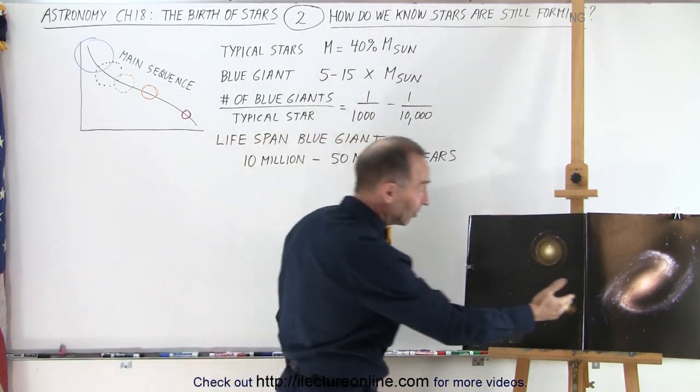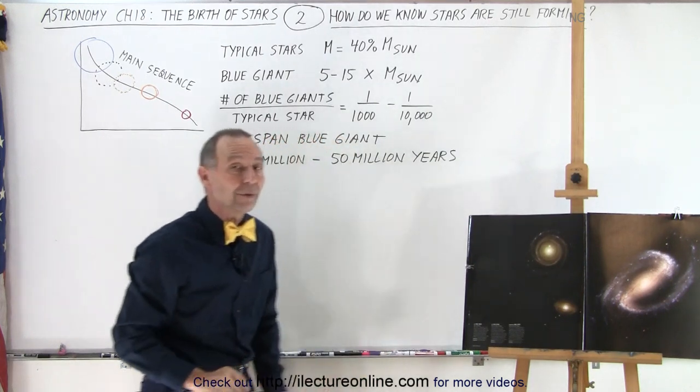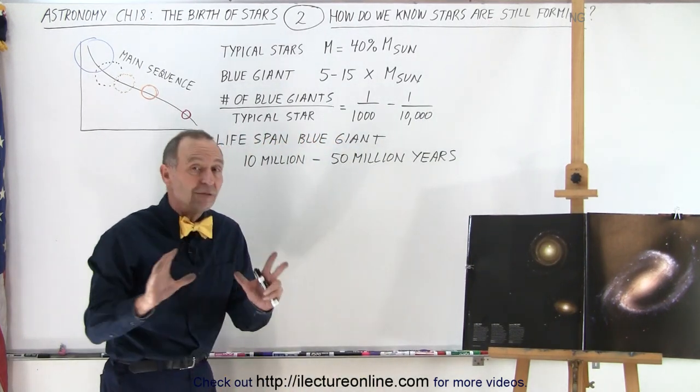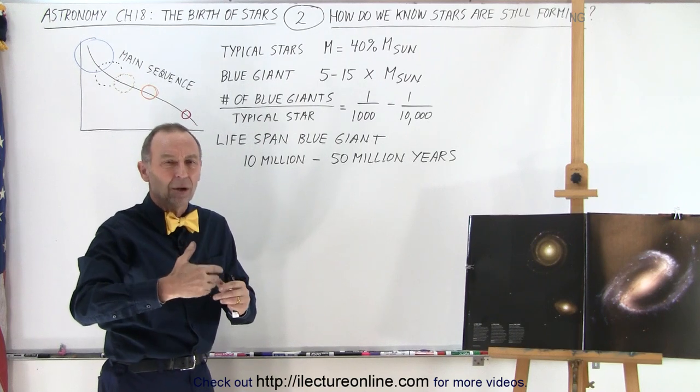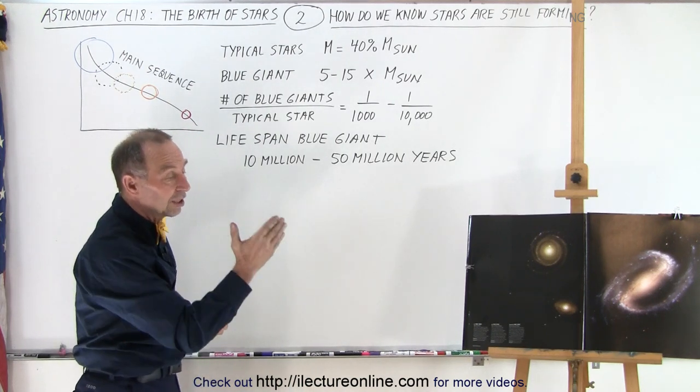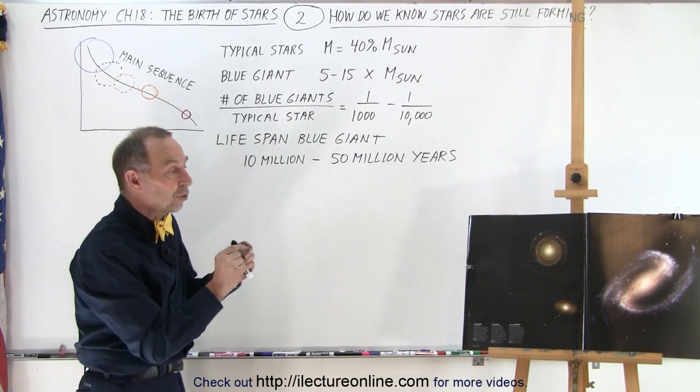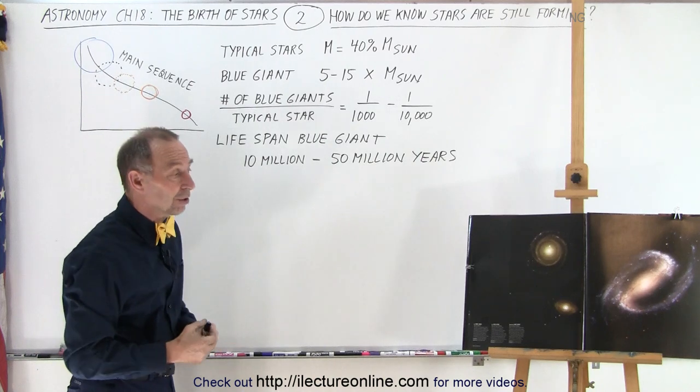So when we see blue giants, and you can see there must be lots of them because there's a lot of blue light coming from these blue giants, even though we know that one blue giant could outshine as many as a thousand or ten thousand regular type stars, there's still a lot of blue light there telling us that those stars just recently formed within the last so many millions of years.